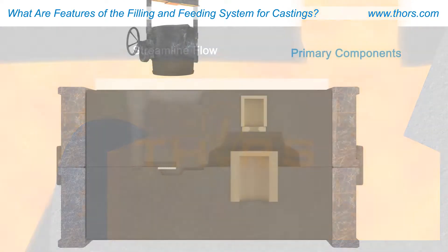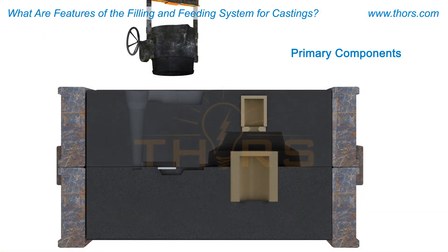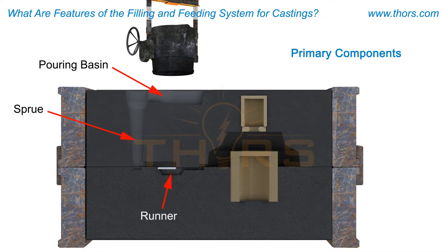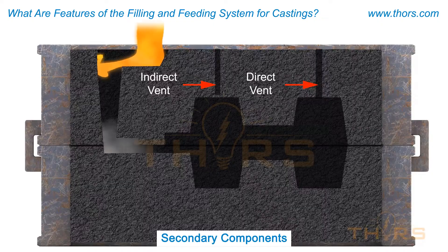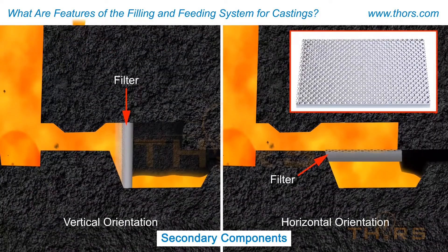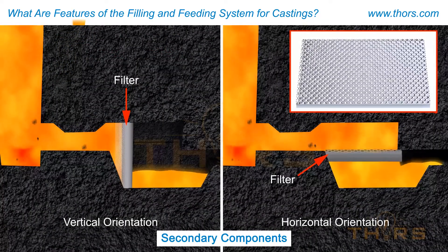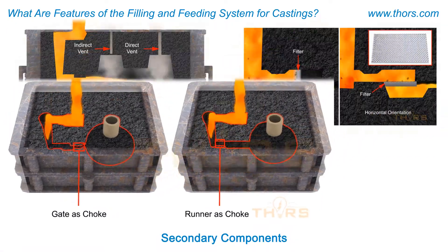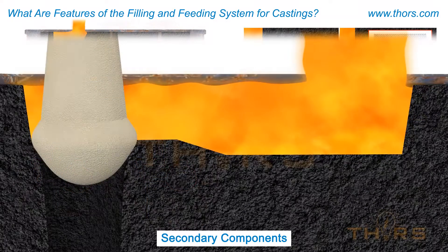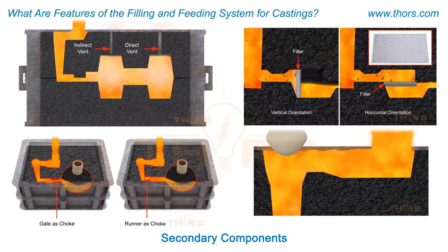The primary components of the filling system include the pouring basin, sprue, runner, and gates. Secondary components such as vents, filters, chokes, and stoppers are also used as needed.